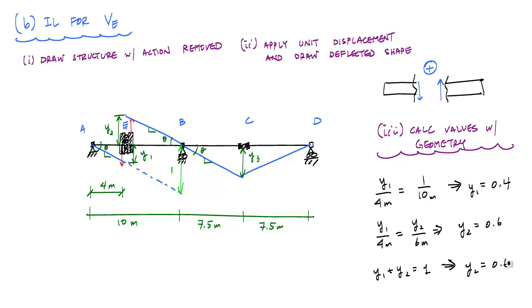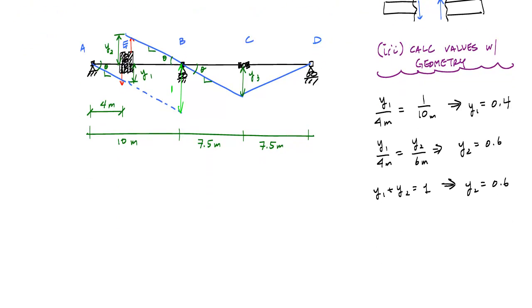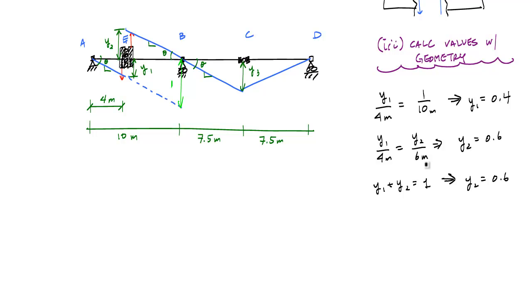And with that being said, I can go ahead and determine y3 as well. Because these angles are the same, I can use similar triangles, which tells me that y2 over 6 meters is equal to y3 over 7.5 meters. And that tells me that y3 is 0.75. Also, I could have just compared everything to this 1 to 10 ratio and calculate everything out. Whatever is easier, whatever works for you.